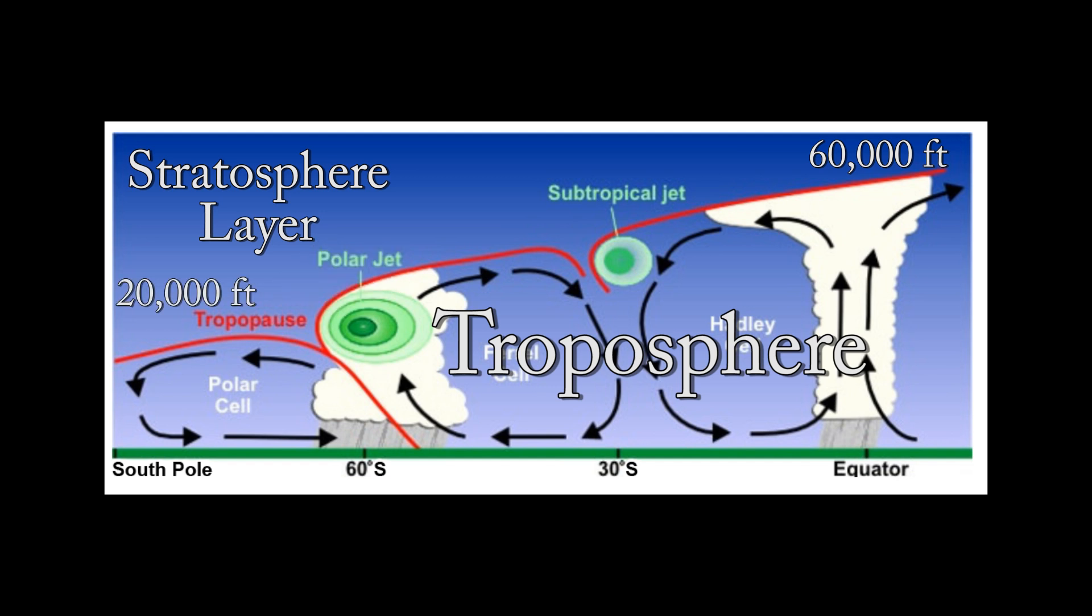These are not exact heights, they're only estimates. The tropopause is a boundary layer separating the troposphere with the next layer above it, the stratosphere.